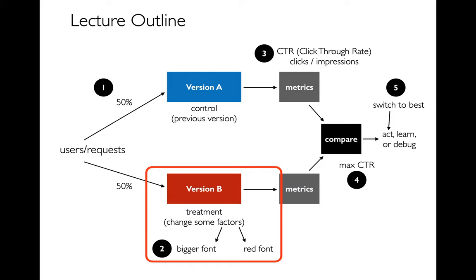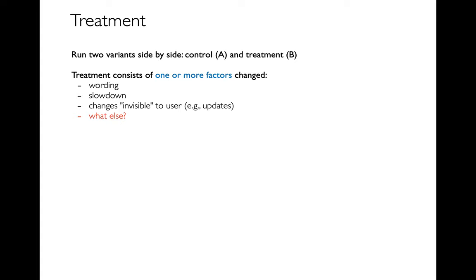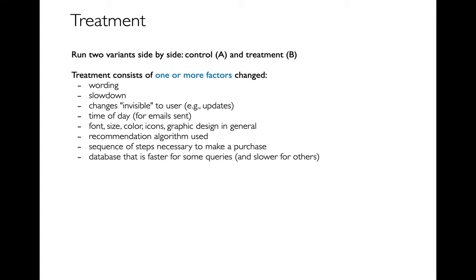We've talked about these metrics. Now let's talk about some of the factors we could change that might influence these metrics, like bigger font or red font. In general, we want to be running two variants side by side — a control or version A and a treatment or version B. For the treatment, there are all these different things we could change: how we word things, the color, and sometimes companies will even artificially slow down the site just to understand how important performance is to users. And it's kind of hard to optimize all of these, so you have to decide: do I change one thing at a time, or do I change multiple things at the same time?